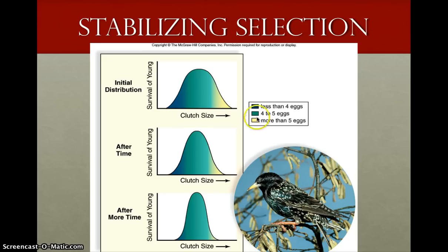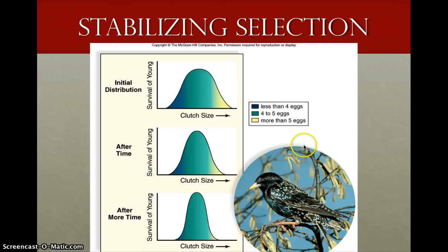Think of it this way: if they lay less than four eggs, they only have a chance for three to survive, and if one of them dies, they're only passing on two offspring. If they lay four to five eggs, the chances that a couple of them will survive are very high. If they lay more than five eggs, they probably didn't get enough nutrients, and fewer are going to survive. So it is adaptive to have four to five eggs, and this curve starts shrinking — the number of birds laying less than four or more than five shrinks until we have a very narrow curve.